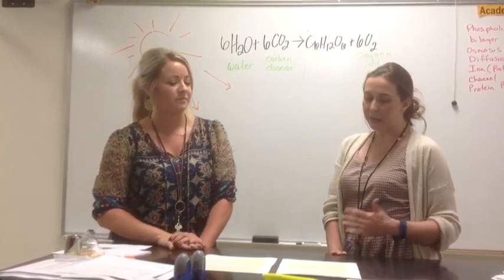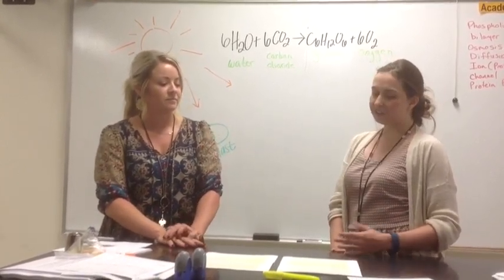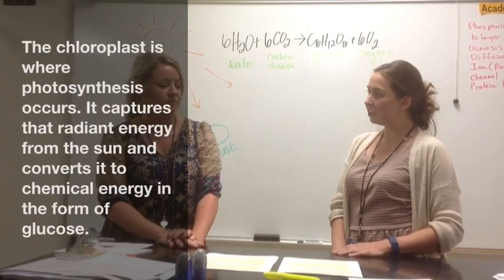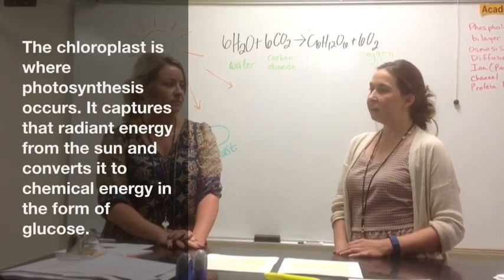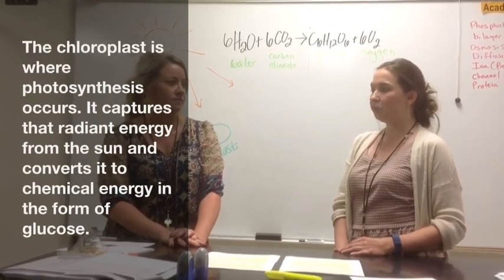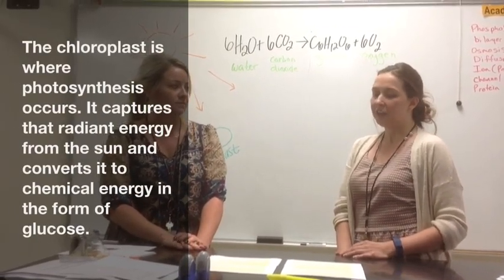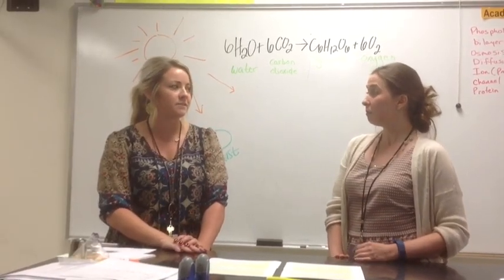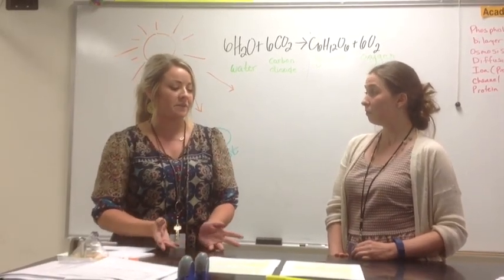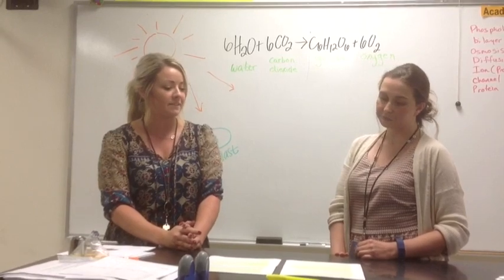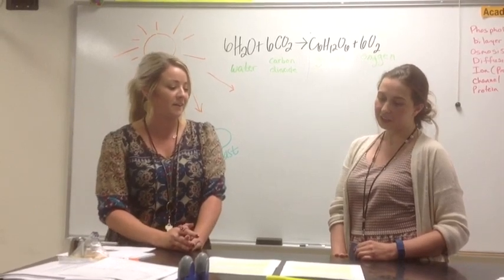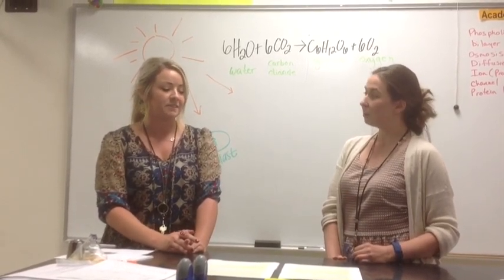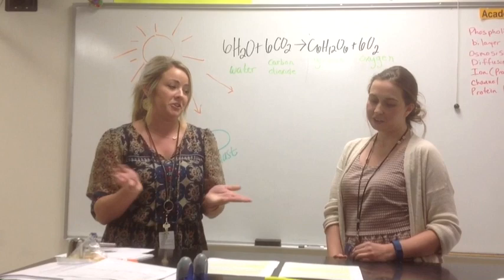The chloroplast is where photosynthesis occurs. It captures the radiant energy from the sun and converts it to chemical energy in the form of glucose. The chloroplast is only found in plants. Also, glucose ends in -ose, so it must be a sugar.